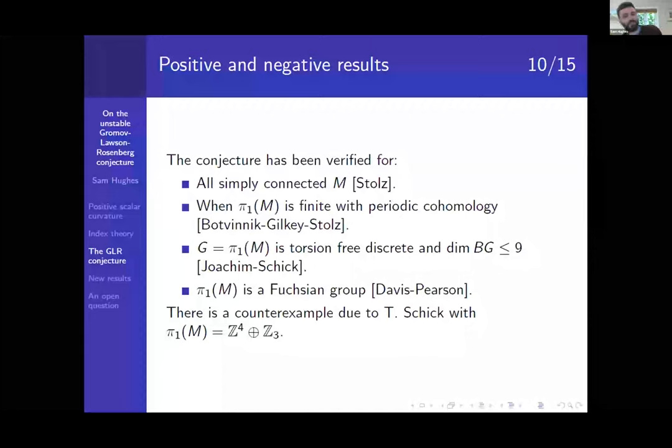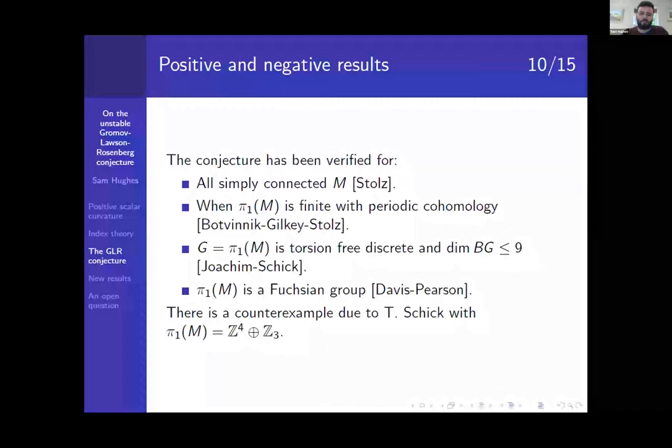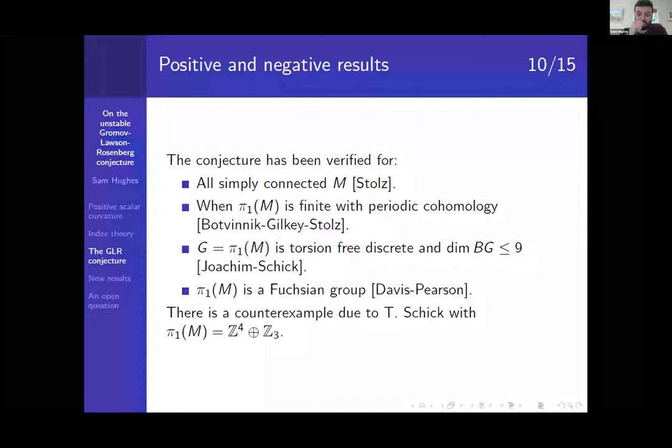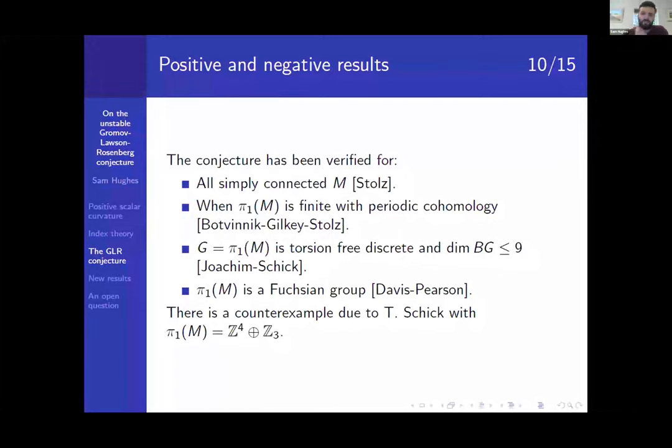So when has this conjecture been verified? Well, it's known for all simply connected M. It's known when the fundamental group of M is finite with periodic cohomology. So this is kind of things like cyclic groups, generalized quaternion groups, SL₂(ℤ/p). So quite actually finite groups, but not a huge amount. And also it's known when G is torsion-free and the dimension of G is at least, is less than nine. And then finally, the only infinite groups which have torsion where it seems to be known for are Fuchsian groups. And there is also a counter example due to Thomas Schick with π when ℤ to the four direct sum ℤ mod 3. So it's not satisfied by everything. You can find manifolds where this isn't, it doesn't characterize positive scalar curvature. It is just an obstruction.